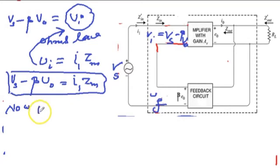Now Vs is written as Vs minus beta V0 plus beta V0. If you add beta V0 and subtract beta V0, it hardly makes any difference. The equation remains the same.